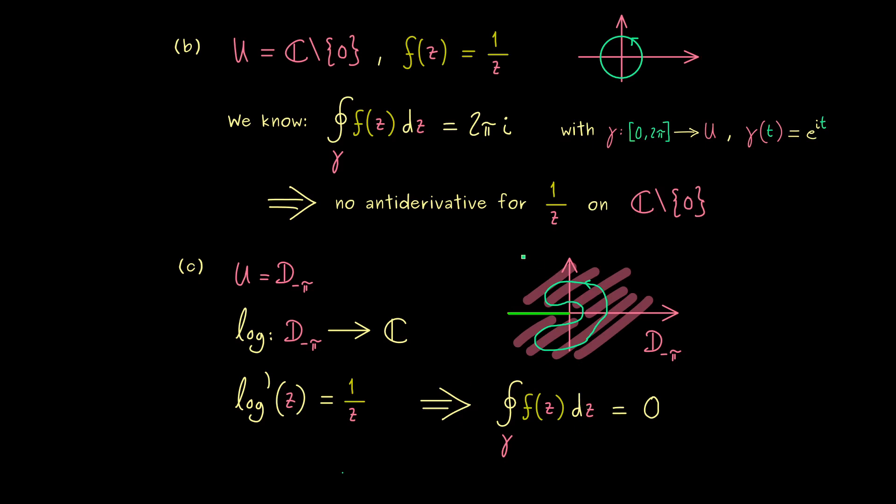In summary we can say for isolated singularities like 0 in this case it can make a difference if we enclose this singularity with the curve. Indeed for 1 over z it makes a difference of 2 pi i. However for 1 over z squared as before it does not make any difference. Therefore you can immediately remember 1 over z plays a special role in calculating integrals.